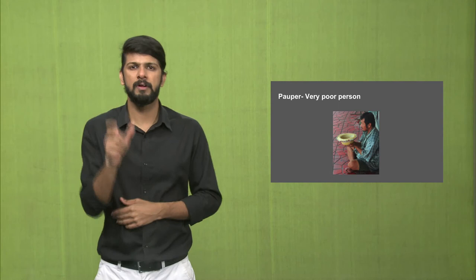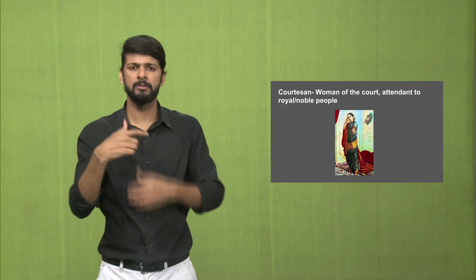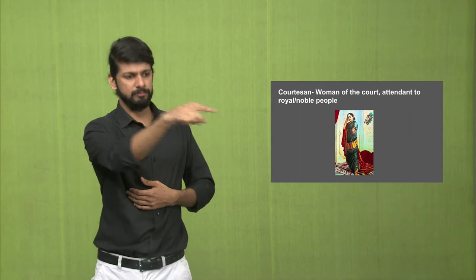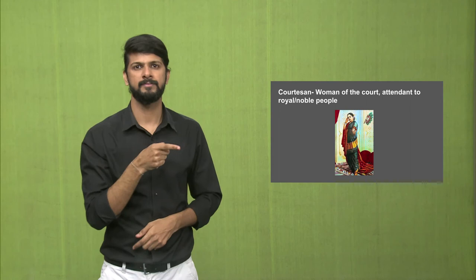New words from the lesson: The word 'pauper' means a very poor person. A 'courtesan' is the woman of the court — one or many — who is an attendant to royal or noble people and was at their service. 'Incarnation' is a being who is the personification of God; for example, Vishnu had ten avatars such as Varaha, Krishna, Buddha, and Ram.